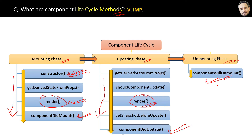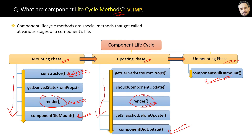Here is the simplest and easiest definition of component lifecycle, which is very easy to remember: component lifecycle methods are special methods that get called at various stages of a component's life. You can name any four to five of these methods in your interviews and your selection is confirmed.